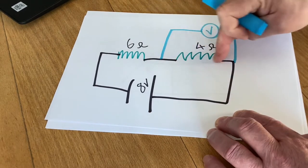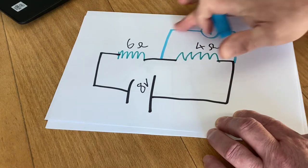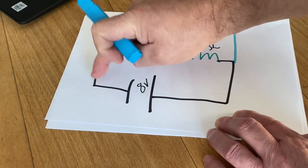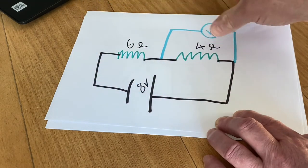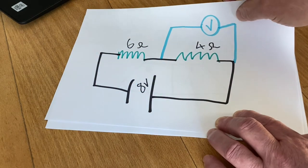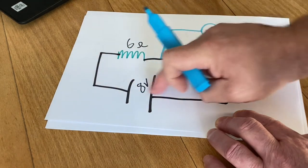So the current flowing through this part of the circuit, which is what we're trying to find out, will be the same as the current flowing anywhere else in the circuit. So we need to do another calculation to find out what the current is.